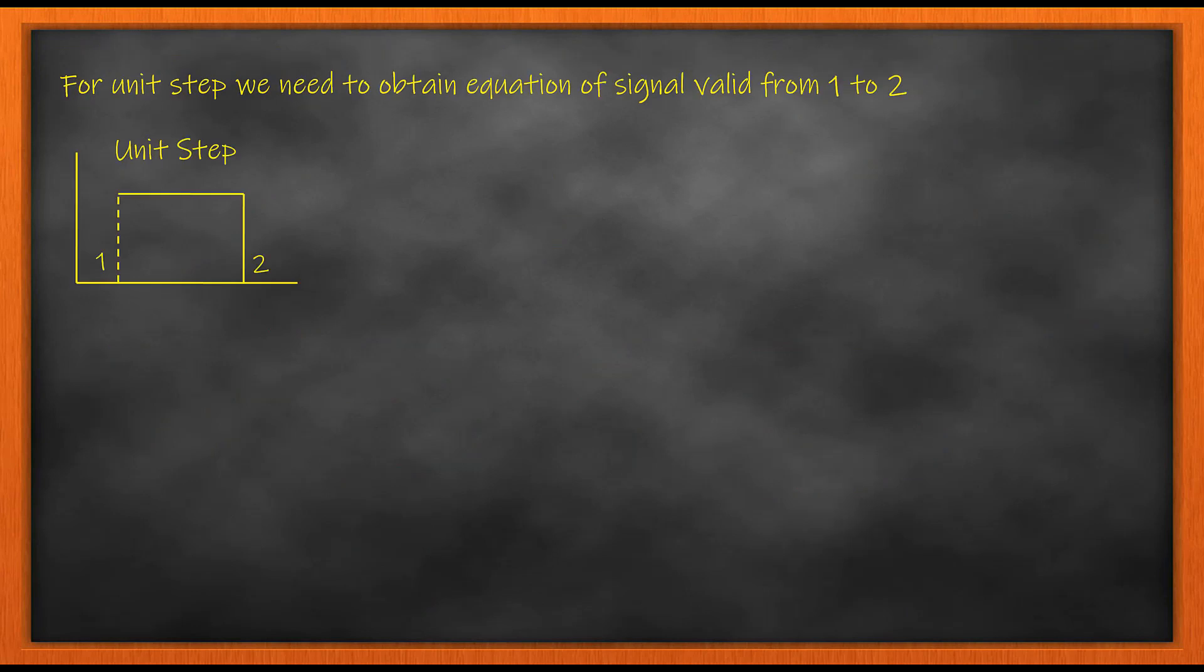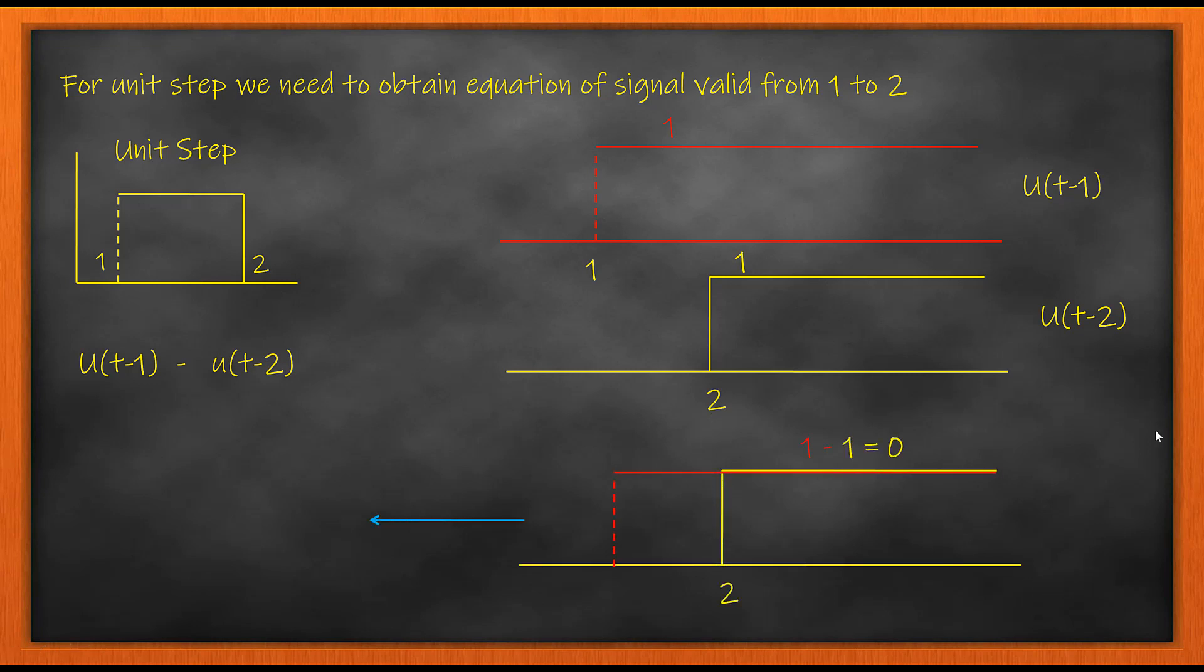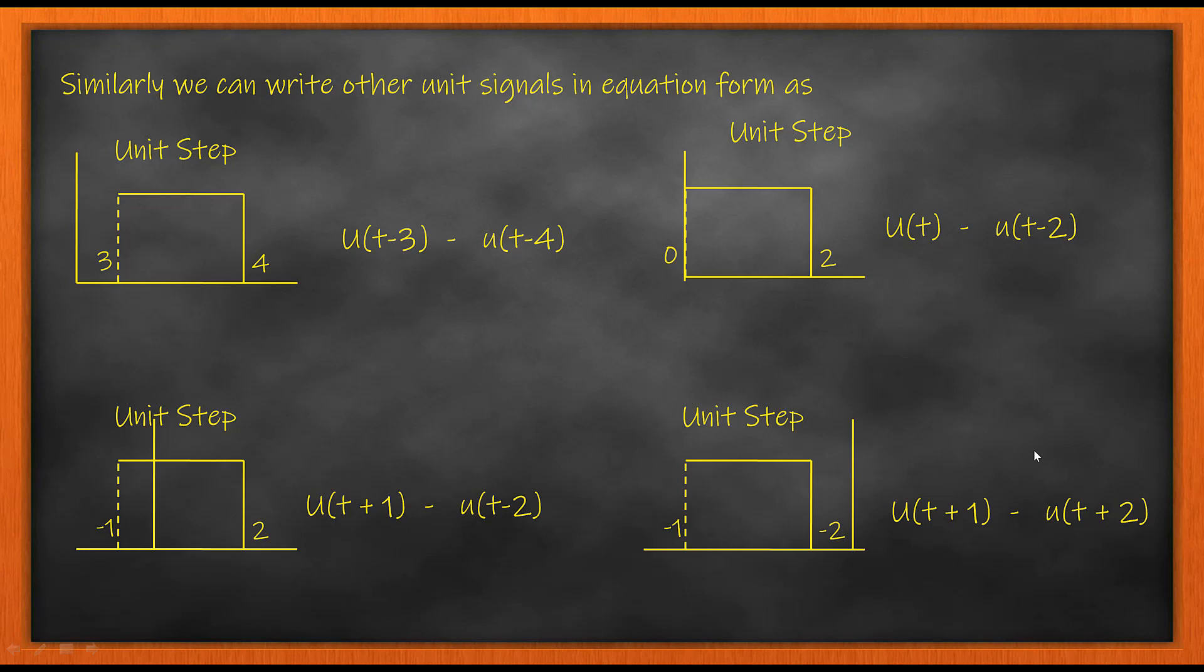For the unit step signal we need to obtain the mathematical formulation which is u(t-1) - u(t-2). u(t-1) is represented in this form and u(t-2) starts from 2. Taking the difference of these two gives you the question waveform which is valid from 1 to 2. Knowing this concept makes it easier to understand several other waveforms of unit step which range from 3 to 4,